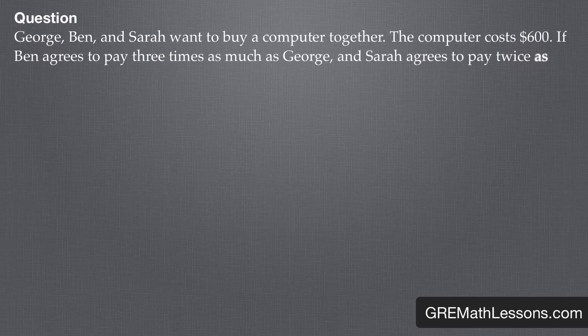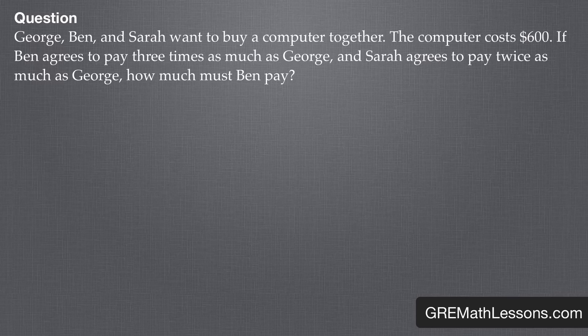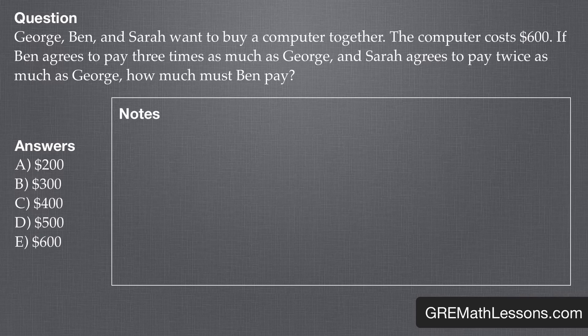Let's take a look at our sample problem. George, Ben, and Sarah want to buy a computer together. The computer costs $600. If Ben agrees to pay three times as much as George, and Sarah agrees to pay twice as much as George, how much must Ben pay? Let's take a quick look at our choices: $200, $300, $400, $500, and $600.